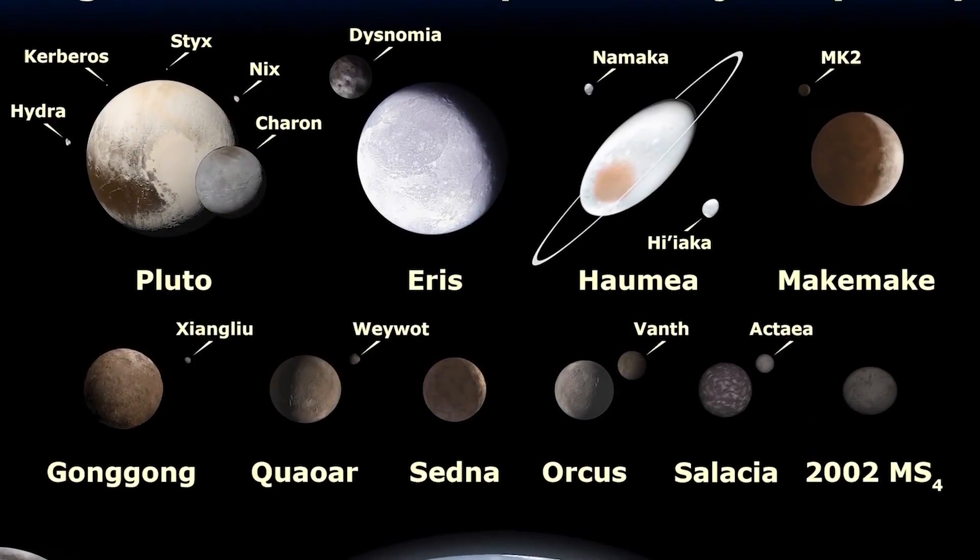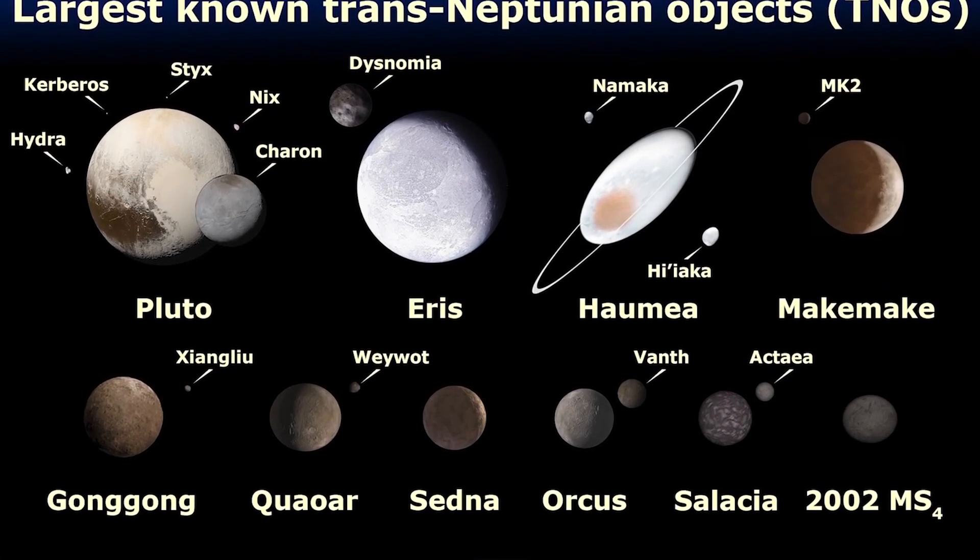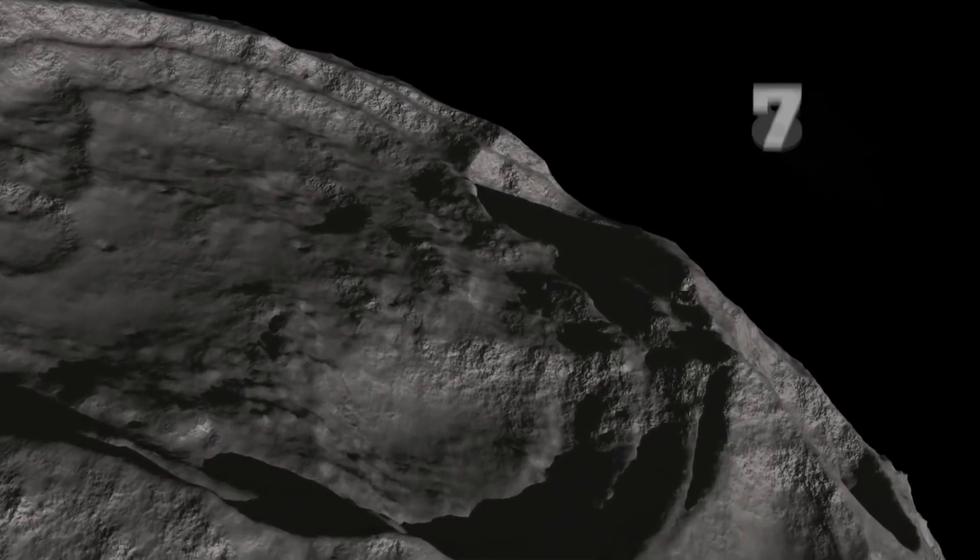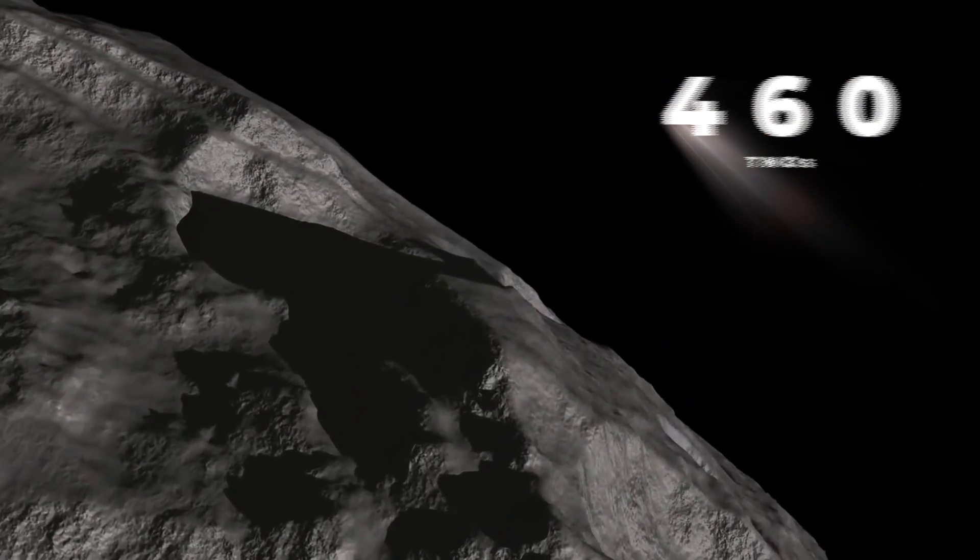The search brought 815 trans-Neptunian objects, also known as TNOs, into a detailed view, with more than 460 detected for the very first time.